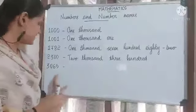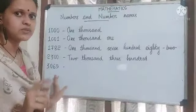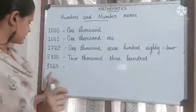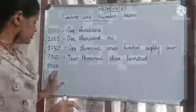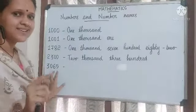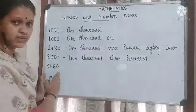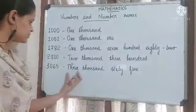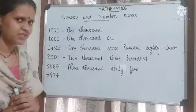Next, let's read this number. The digit in the thousands place is 3, so start with 3,000. The digit in the hundreds place is 0. Then look at the next two digits, 6 and 5 — that reads as 65. So how do we read this number together? 3,065.